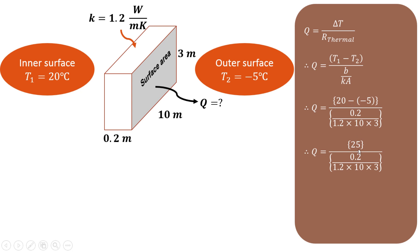So 20 + 5 = 25 divided by the denominator. Making the calculation, it is 25 divided by 5.555 × 10⁻³. Therefore, Q equals 4500 Watts.